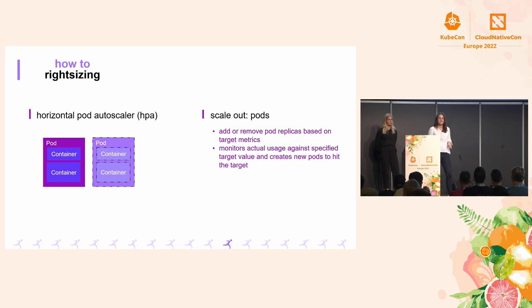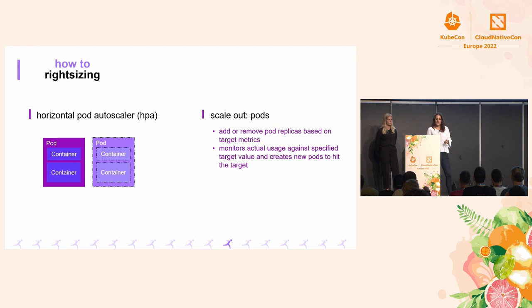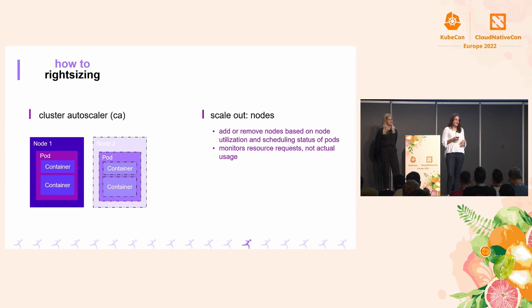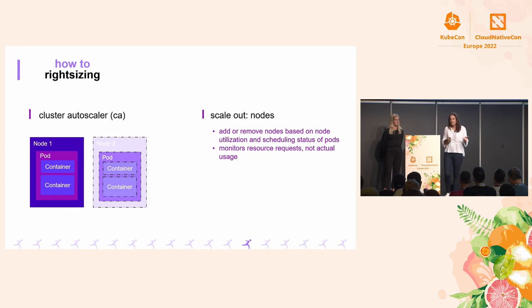The Cluster Autoscaler does a similar thing to the Horizontal Pod Autoscaler — it adds or removes nodes. But this one is not based on actual usage; it's based on the scheduling status of your pods. So if the Cluster Autoscaler sees it's not possible to schedule a pod due to resource constraints on your node, then it brings up a new node.